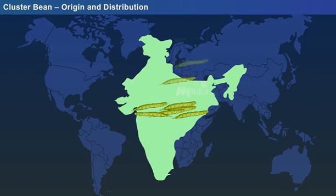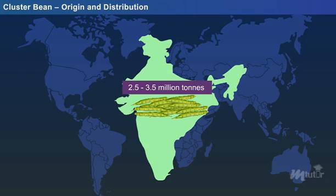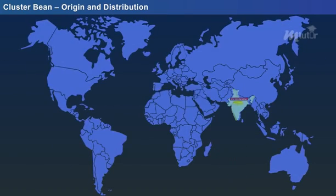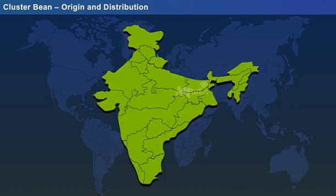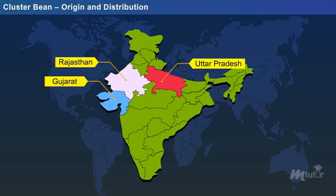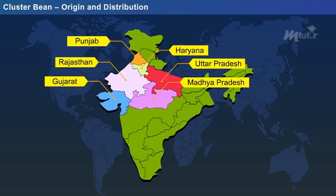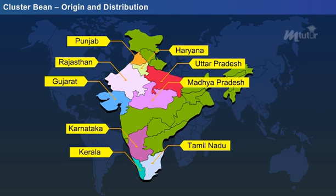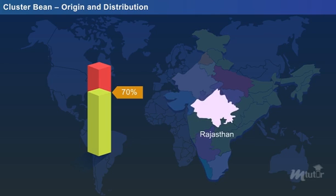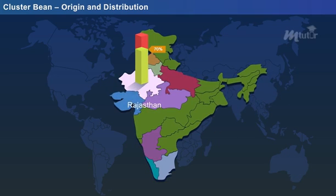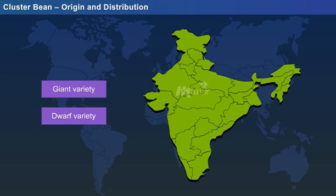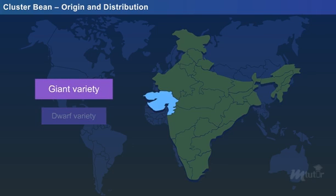India is the world's largest producer with an annual production of 2.5–3.5 million tons. Nearly 70% of India's production is being exported to USA and Europe. In India, Guar cultivation is carried out in the states of Rajasthan, Gujarat, Uttar Pradesh, Madhya Pradesh, Haryana, Punjab, Kerala, Karnataka, and Tamil Nadu. Comparatively, nearly 70% of India's overall production is obtained from Rajasthan, which makes this state the largest producer in India. Two commonly cultivated types are the giant and dwarf varieties — the giant type is chiefly grown in Gujarat, while the dwarf type is grown in other cultivable regions.